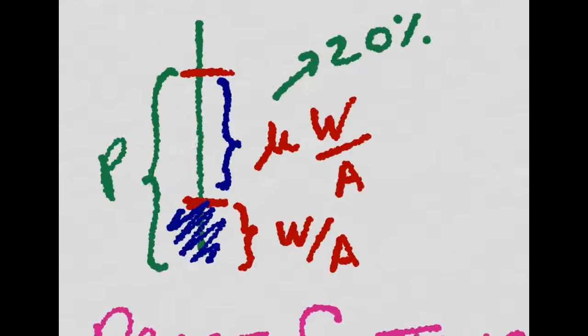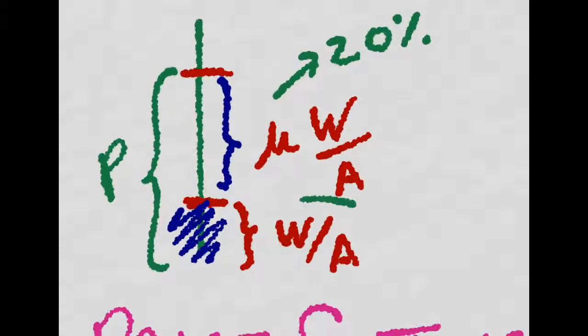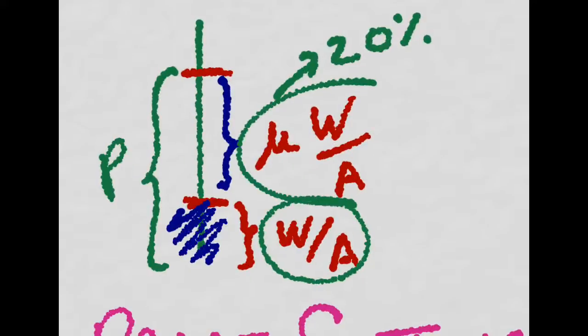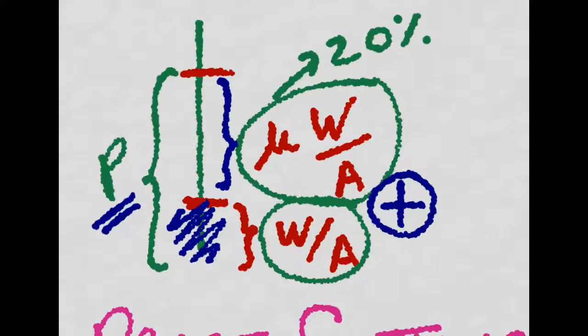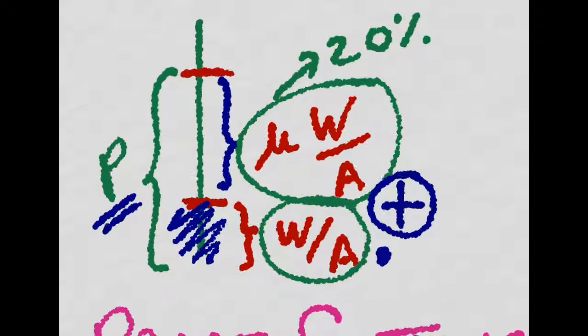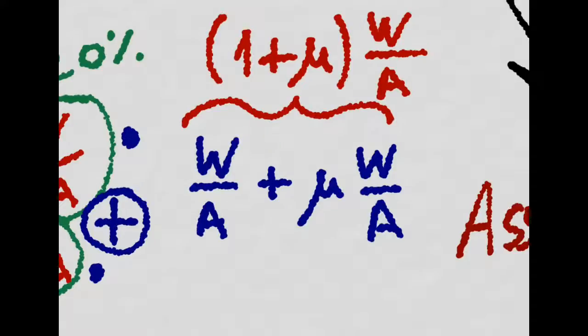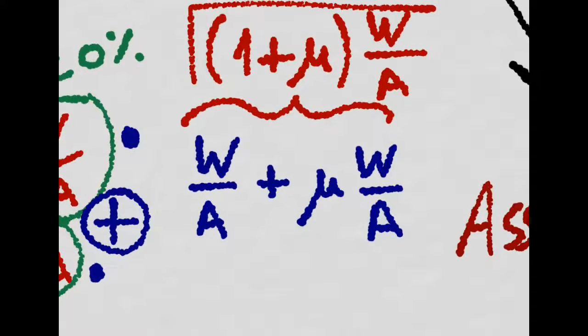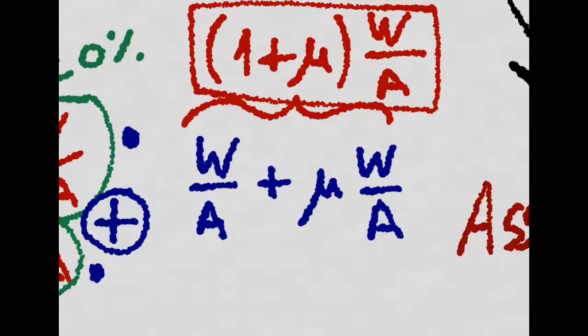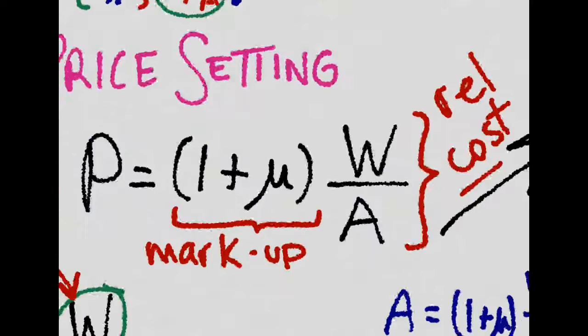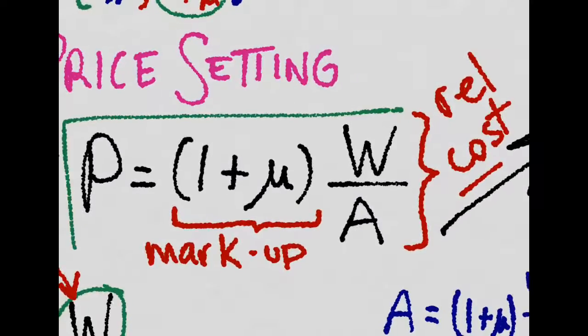If prices are composed by these two components, the costs and this markup, this percentage over costs, then the price will just be this guy plus this guy. But that could be rewritten as this expression right here. One plus the markup, all that times the relative costs. And that is how we get the price setting equation.